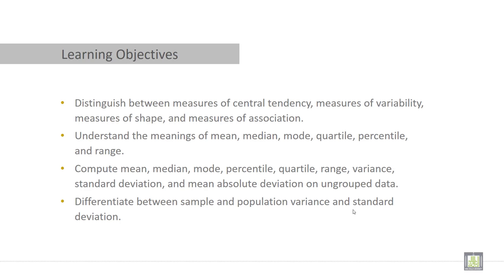So there are four items important in this: measure of central tendency, measure of variability, measure of shape, and measure of association.